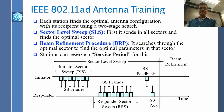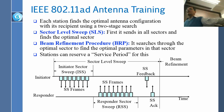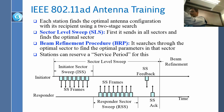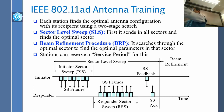Antenna training. Each station finds the optimal antenna configuration with its recipient using a two-stage approach. First we start omnidirectional, then we find out you are roughly in this area, then we go into that area and do exact, much narrower. Because if we do much narrower in the beginning, then I have to do a lot of effort. So I first take a big area, then divide into four, then divide into four again. We do it in two steps.